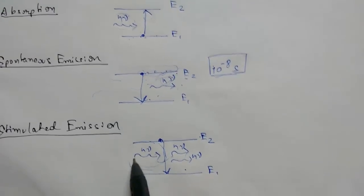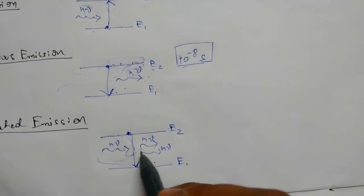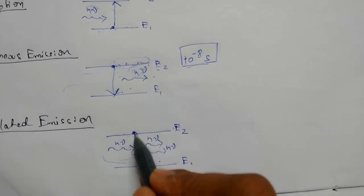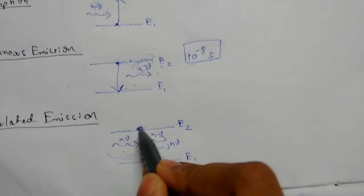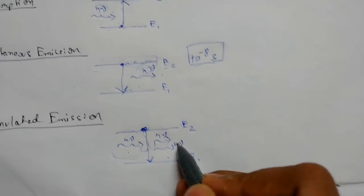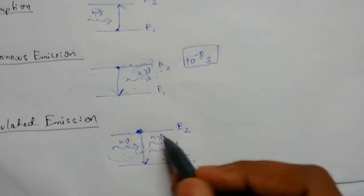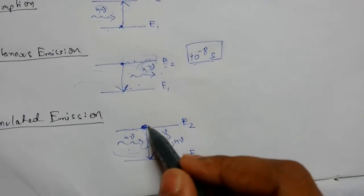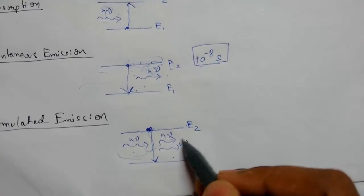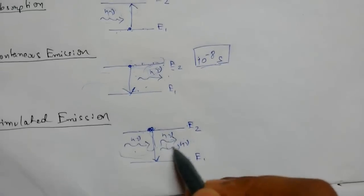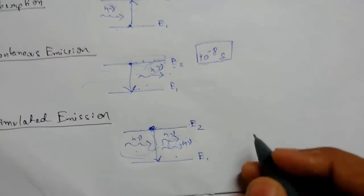We are imparting a photon, so it emits an additional photon of the same frequency. Due to this, an additional photon is emitted of the same frequency. This process is known as stimulated emission.